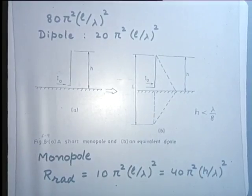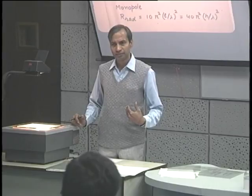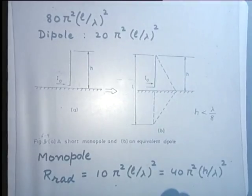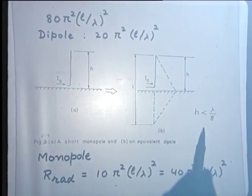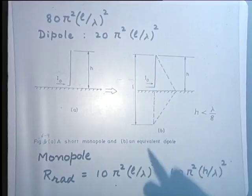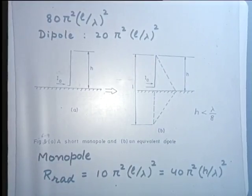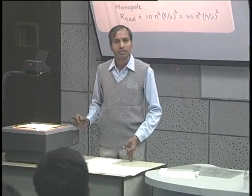Since we extended the results for the Hertzian dipole based on uniform current, there is a limitation: H should not exceed lambda by 8, so that the corresponding dipole does not exceed lambda by 4, which was the same restriction we put on the short dipole antennas. With this kind of restriction, the radiation resistance is not going to be very large, but such antennas are still used because of convenience, cost, and similar considerations.